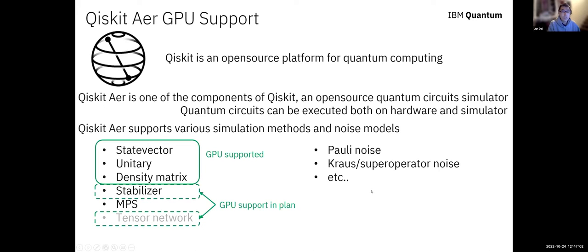Now I'd like to talk about the GPU support for Qiskit Aer. Currently, Qiskit Aer supports three types of simulation methods with GPU: state vector, unitary, and density matrix. We are also planning to add GPU support for the stabilizer simulator. Additionally, we are developing a tensor network simulator, which is an enhanced simulator for the MPS simulator.